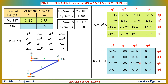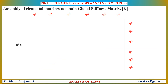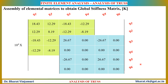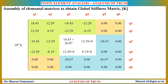After finding the elemental stiffness matrices, we now find the global stiffness matrix. The global stiffness matrix will have 6 degrees of freedom and hence a size of 6×6. By assembling the element stiffness matrices — with empty elements represented as zeros — we obtain the global stiffness matrix for the entire structure.